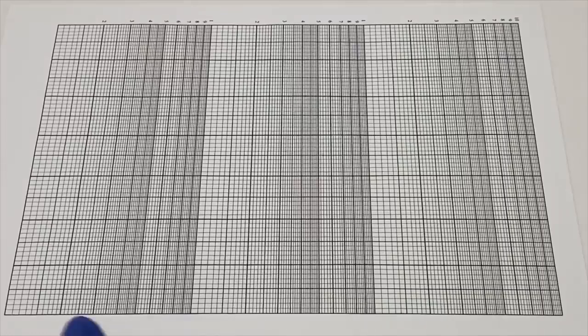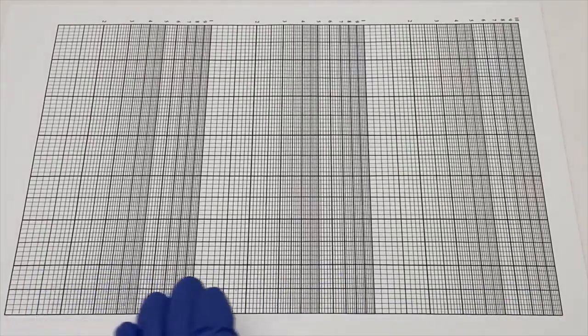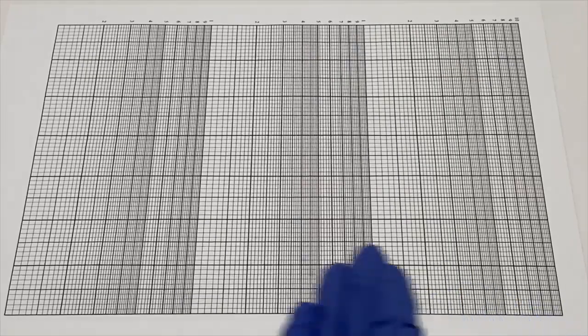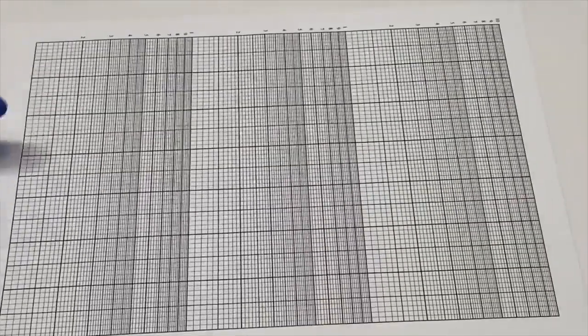To read this graph, on your x-axis, you'll notice that it increases in a logarithmic scale, meaning that it goes up exponentially, whereas on your y-axis here, you'll notice a linear scale.